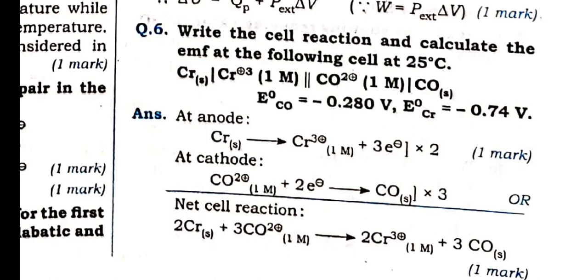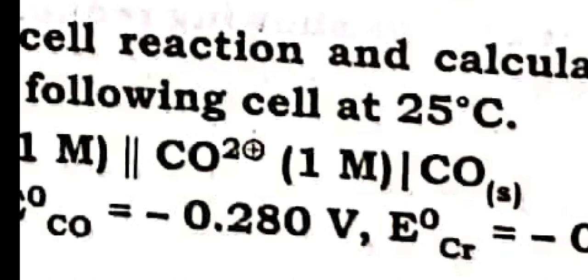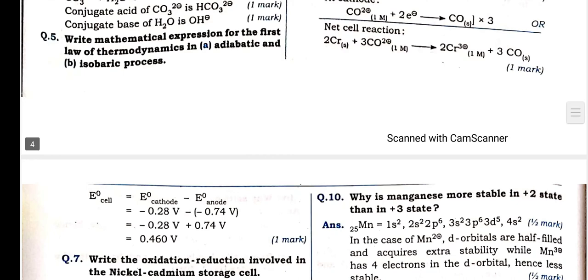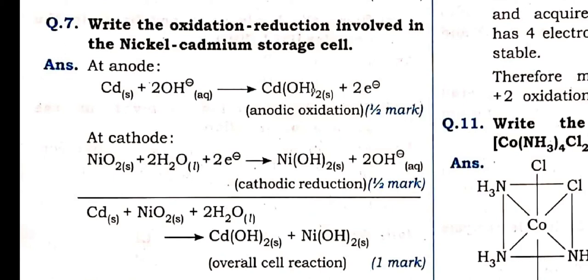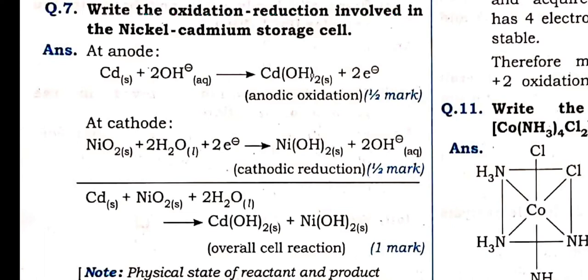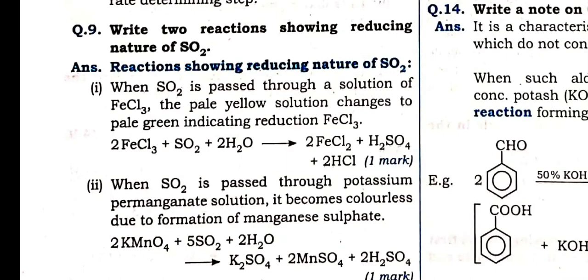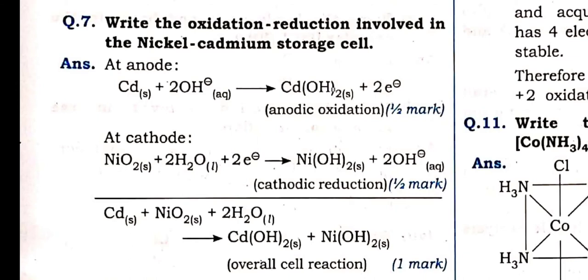Cell representation: write the cell reaction and calculate EMF. Right side part is cathode. Cathodic and anodic reactions are very simple from electrochemistry. For the nickel-cadmium reaction: cadmium acts as anode. Nickel is coated with nickel oxide, so cathodic reaction is expressed accordingly.